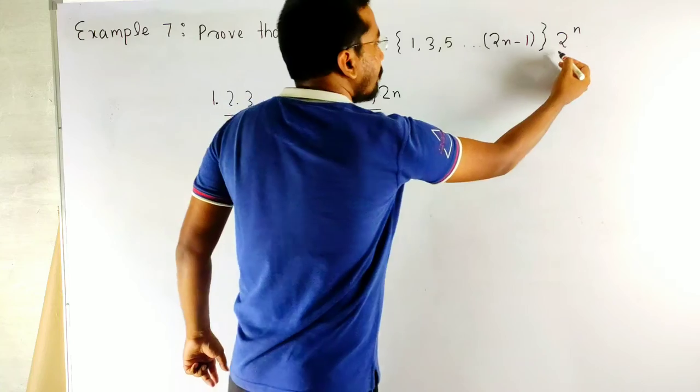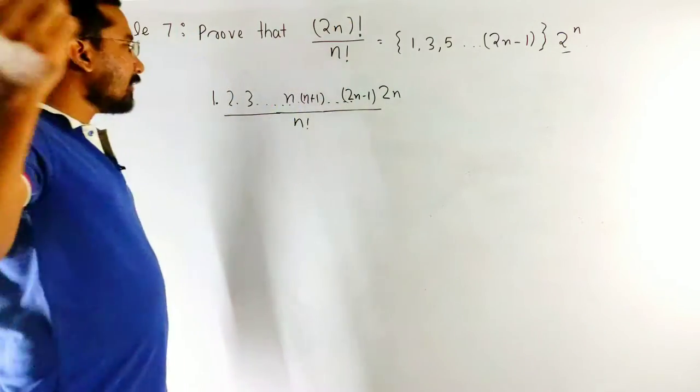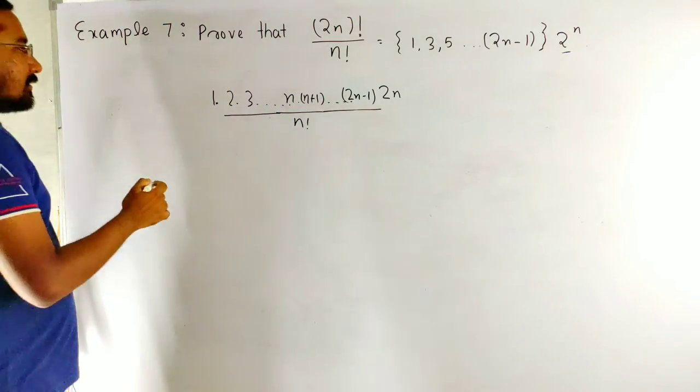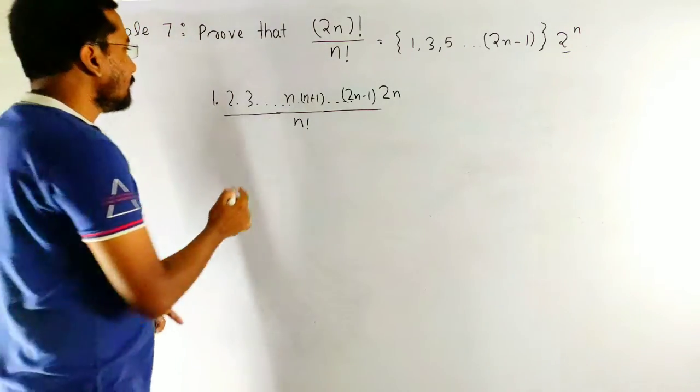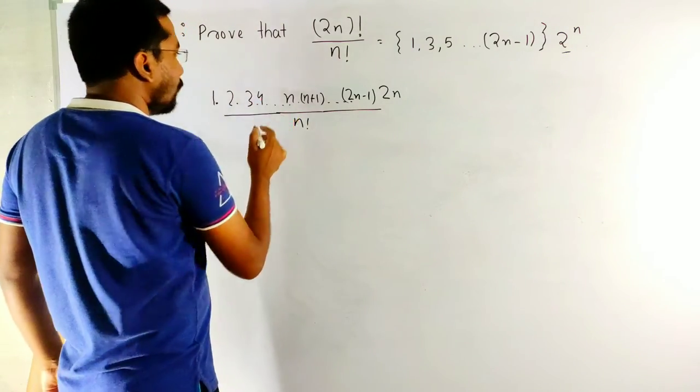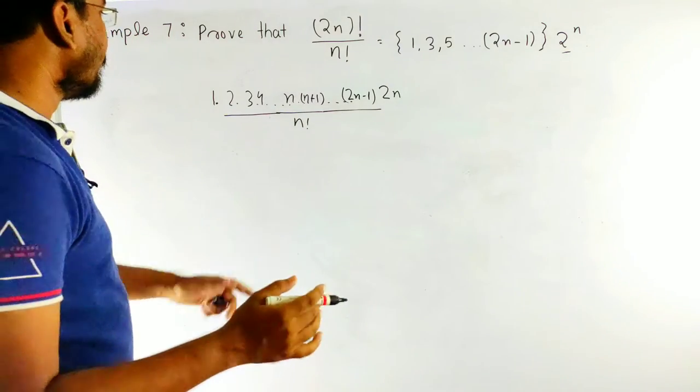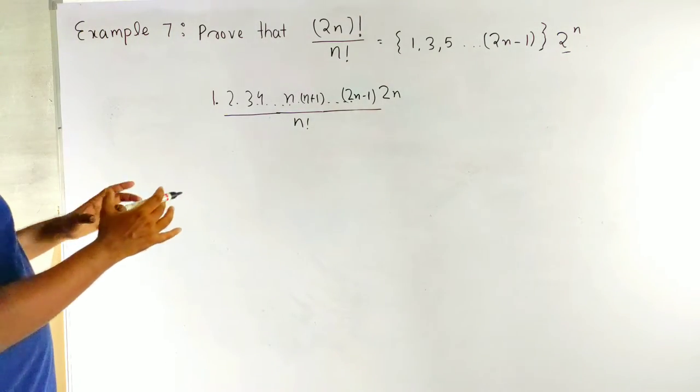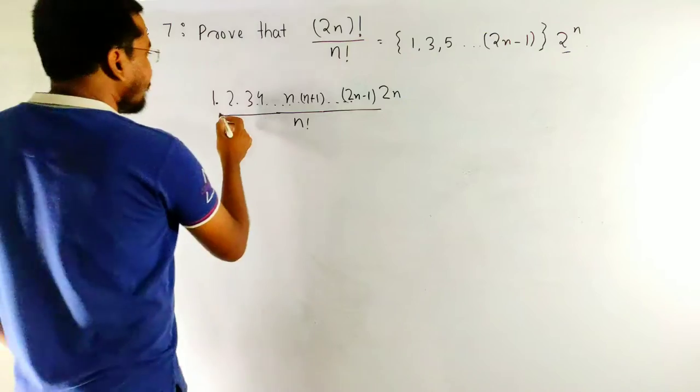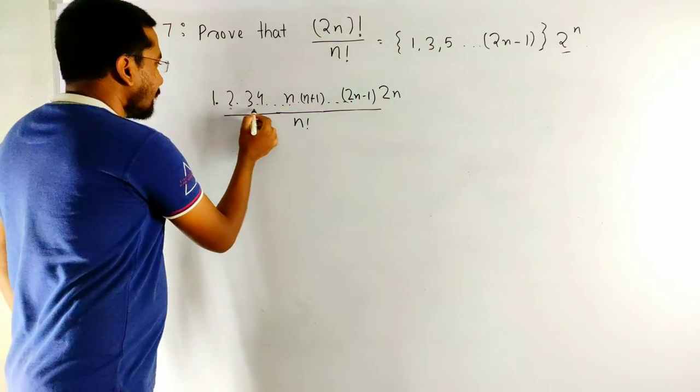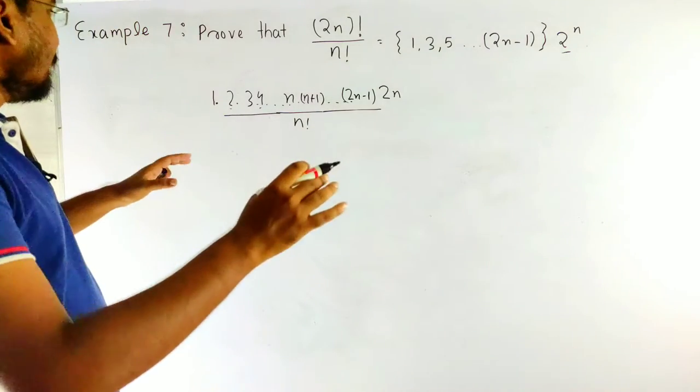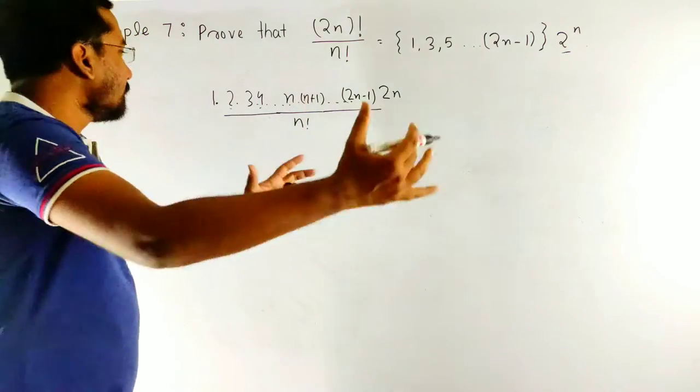I have to take 2 to the power n. How can I take? Because, as you have seen that, there is 2, 3 and in between 4 and up to 2n. Can I just take 2 to the power n factorial? I can, I can separate it odd number and even number.